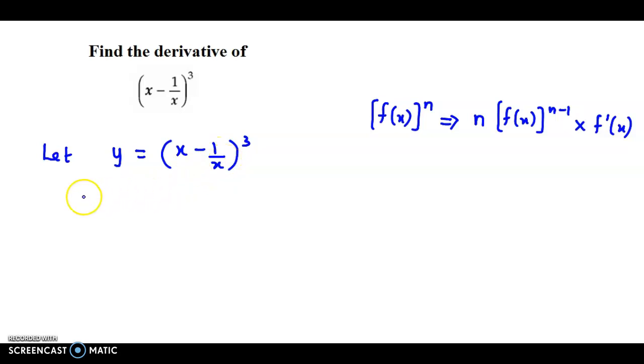So we have dy by dx is equal to n that is 3 into f(x) that is (x minus 1 upon x) raised to n minus 1 that is 3 minus 1 which is 2 into derivative of f(x) that is derivative of (x minus 1 upon x). So proceeding further we get 3 times (x minus 1 by x) the whole square.